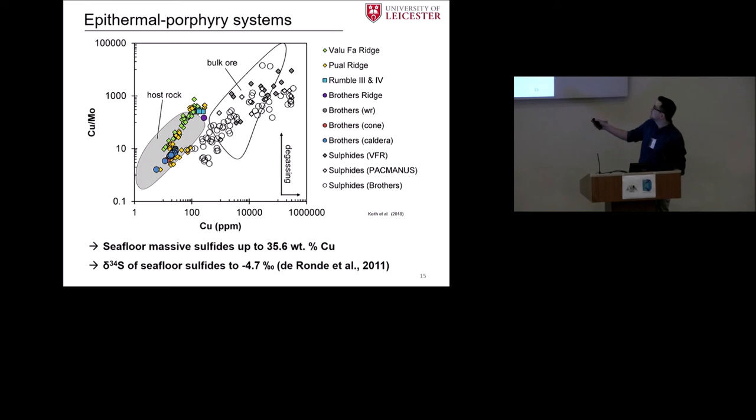When we now add bulk ore data from these high sulfidation systems which is shown here in that white field where we suggest we have a contribution by degassing it plots up here and if this works for our submarine systems we should again see an overlap and indeed we do. For brothers in the white circles we see them here and they have higher copper and a higher copper moly ratio than the host rock data and the same applies to the Valu Fa ridge and to PACMANUS which is a hydrothermal field at Pual Ridge in the Manus basin.